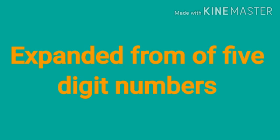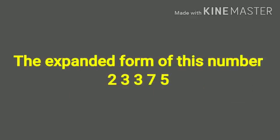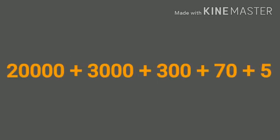Now, write the expanded form of a 5-digit number. Look at this number. In this number, 2 is in the ten-thousands place, 3 is in the thousands place, the next 3 is in the hundreds place, 7 is in the tens place, and 5 is in the units place. The expanded form of this number is 20,000 plus 3,000 plus 300 plus 70 plus 5. Understand?